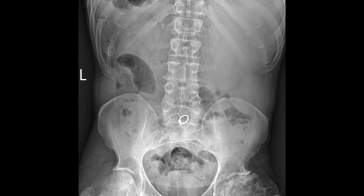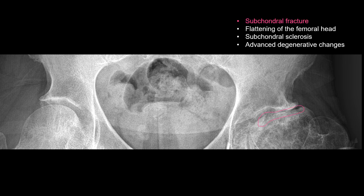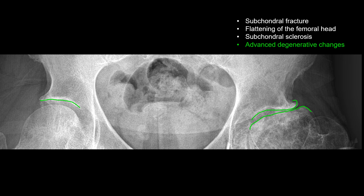Let's take a look at a normal hip and femoral head in comparison to one with avascular necrosis, then look at some examples. This patient presented with severe right hip pain and low back pain. Notice considerable asymmetry between the two visualized femoral heads. A small subchondral fracture is visible at the superior aspect of the femoral head. The femoral head is flattened and slightly deformed. The area of increased density at the articular surface represents subchondral sclerosis.